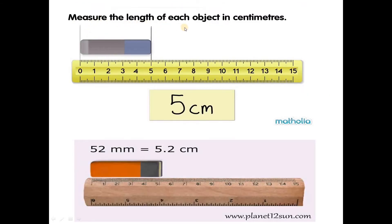Measure the length of each object in centimeter. How can we measure the object? By using a scale. Here, the starting point is zero. From zero to five — the measurement of this eraser is five centimeters.